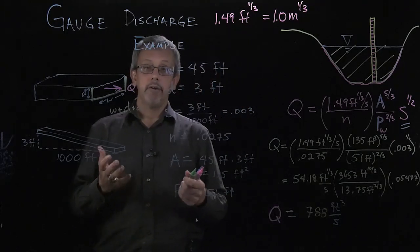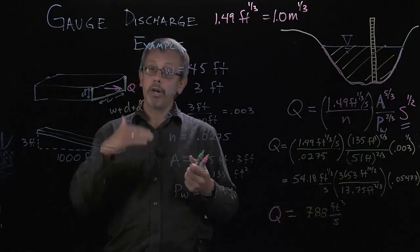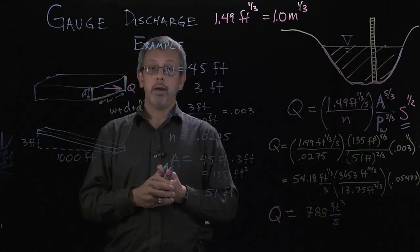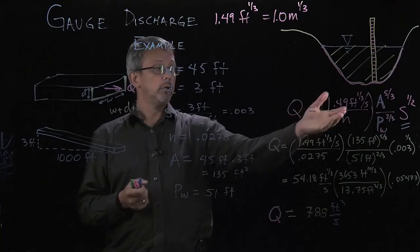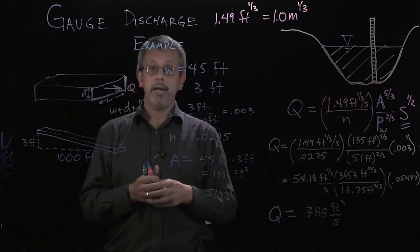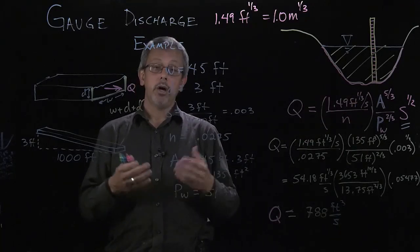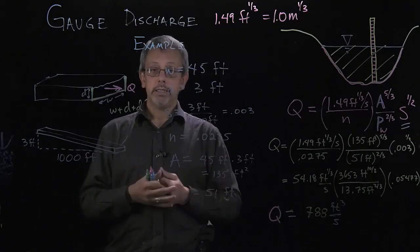Notice, if I wanted to calculate it for a different depth, I would have to go through and recalculate the area and the wetted perimeter, although the slope and the Manning's coefficient would remain the same.